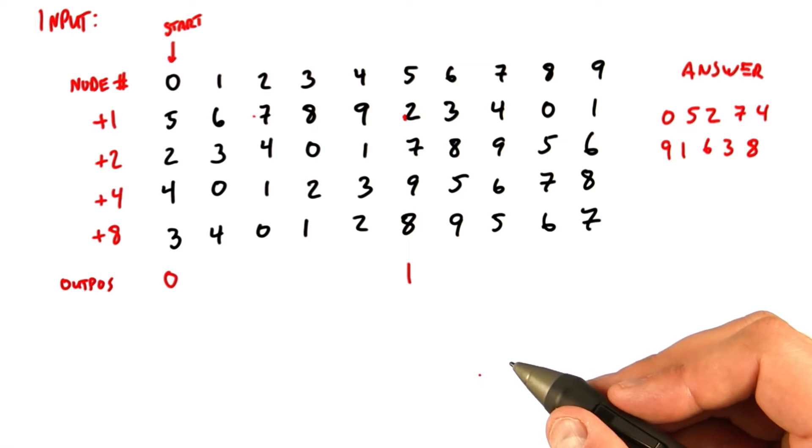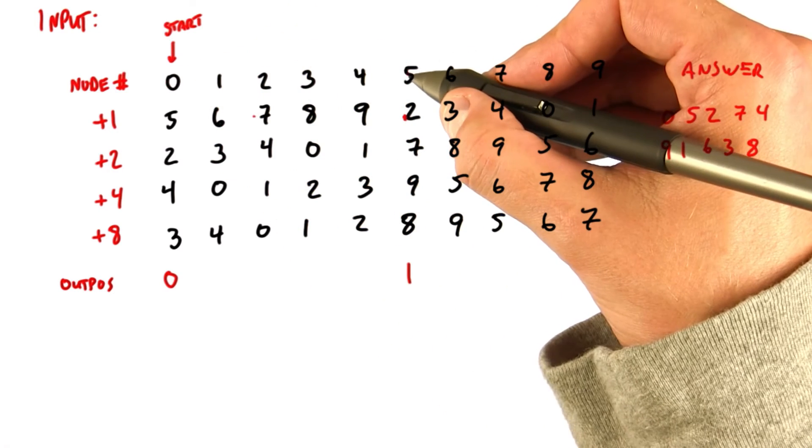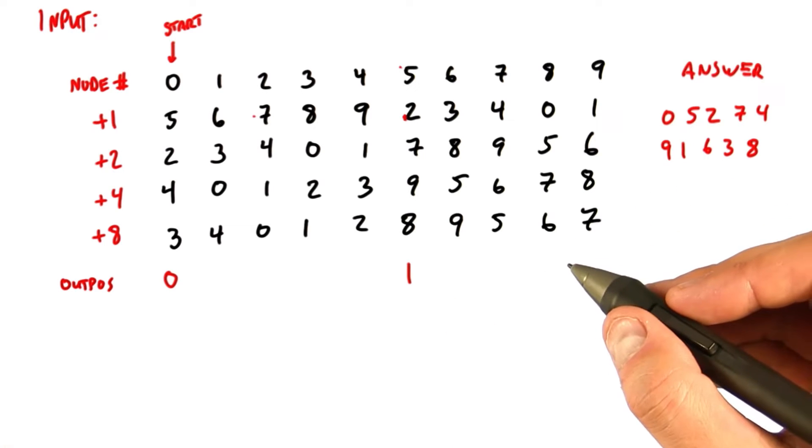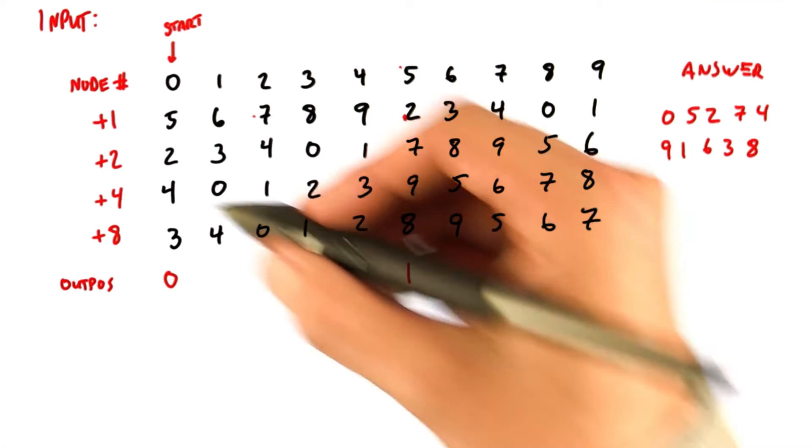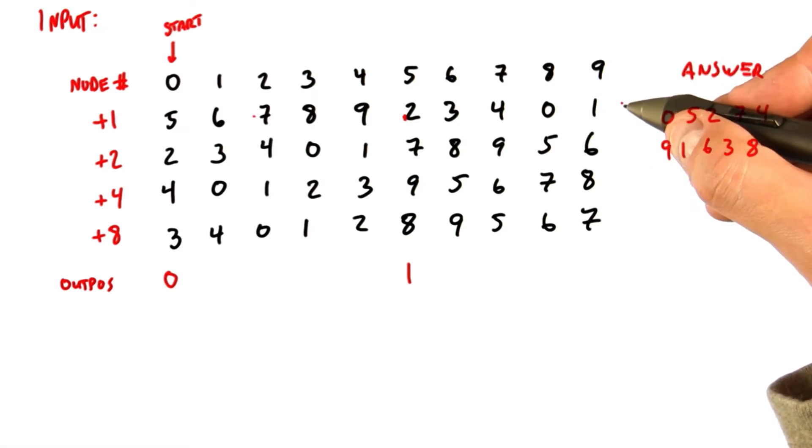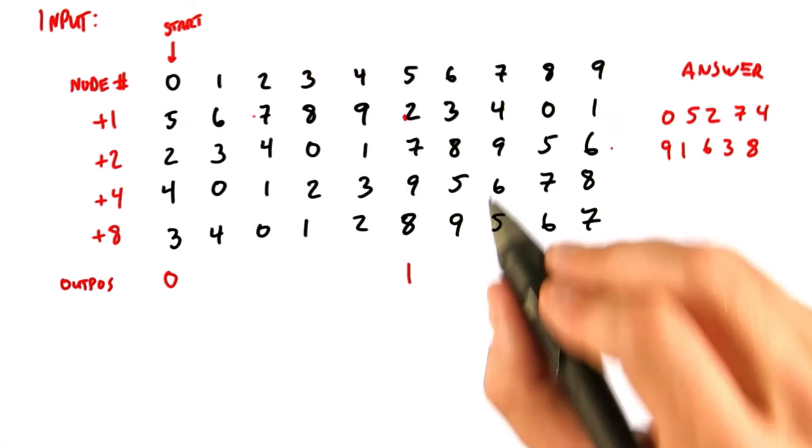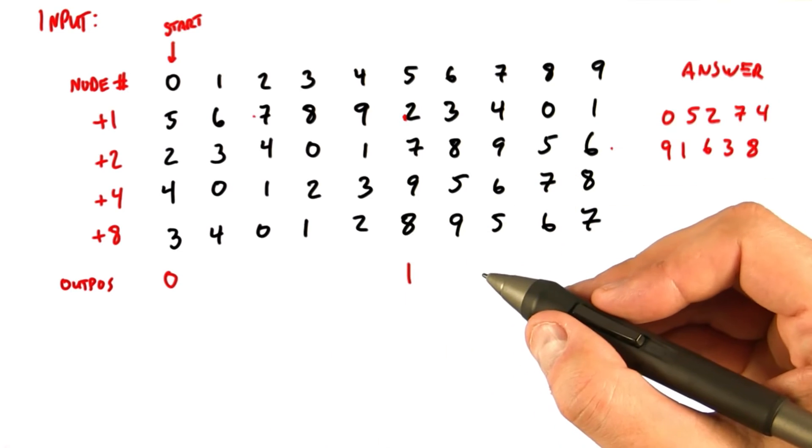And so now we have two nodes that are awake, node 0 and node 5. So now both awake nodes are going to wake up another node and help those nodes calculate their output position. So now instead of looking at the immediate successors plus 1, we're going to look at the next line, plus 2. And we're going to use this to find the nodes 2 away from each of our awake nodes.